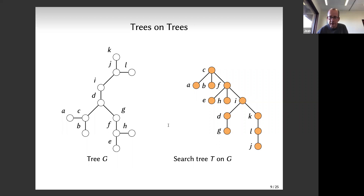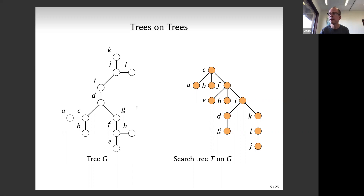There's no clear order on the connected components - unlike binary search trees where there's a left and right. The node you search for lies in one connected component and that's where you go. Binary search trees are special cases of trees on trees where the underlying tree G is a path - you order the vertices from left to right, pick a root, and get a left part and a right part. Trees on trees generalize binary search trees: trees built on trees, while binary search trees are trees built on paths.